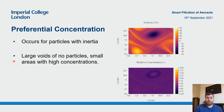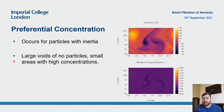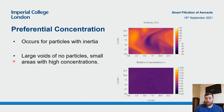This phenomenon is known as preferential concentration, where we have very large voids in the flow with no particles and some small areas of very high concentration. Note that the scale here goes from 0.5 to 3.